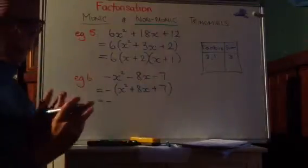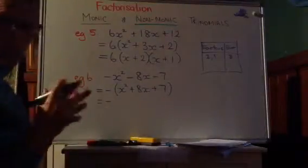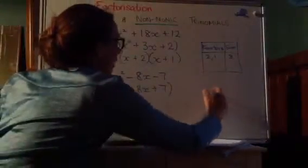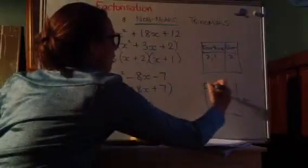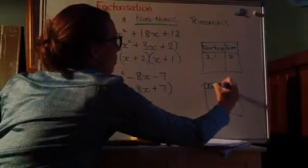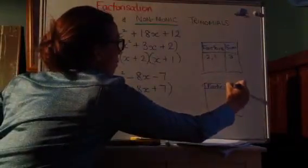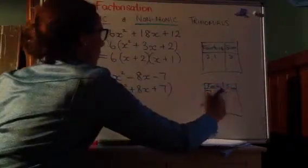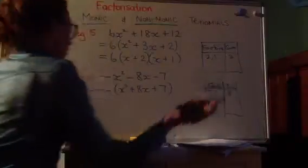So keep that negative there. It's really important because that's a factor on its own. Negative one is one of the factors. And then I look at this and I do the same thing. I'm looking at seven and I'm thinking oh well seven's a prime. So there's only really one way we can go about this. Seven and one. Seven plus one equals eight. So that's great.